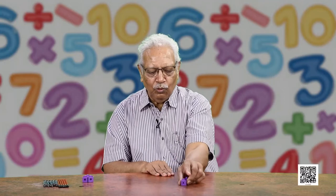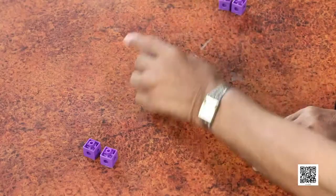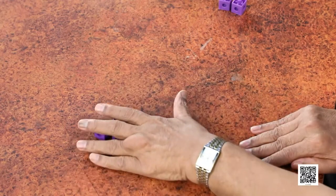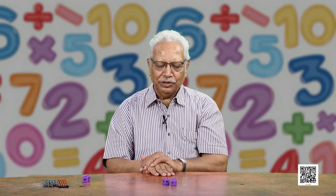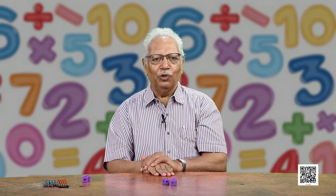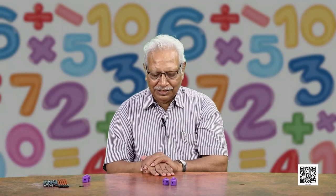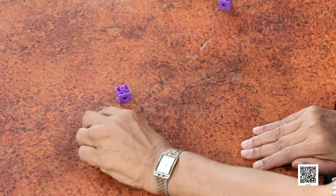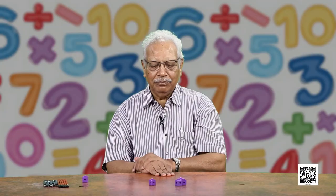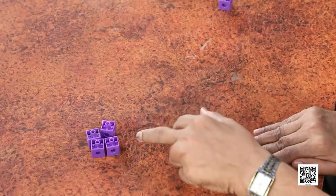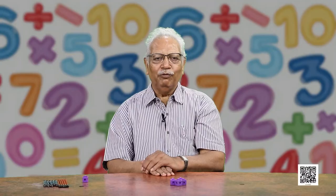Similarly, if these are 2, then if I add 1 to it, how many of these are there? Can you count? These are 3. So, 2 and one more make 3. Similarly, if I add 1 to these 3, then what happens? You can count again: 1, 2, 3, 4. So, they make 4.